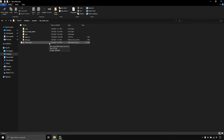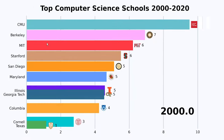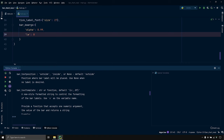I'll open the rendered video file. As you can see, there's a title text at the top of the video, a period label on the right side, and the bar label and tick label fonts have been adjusted.